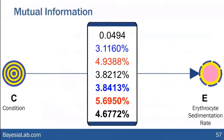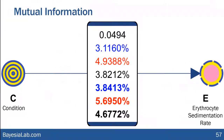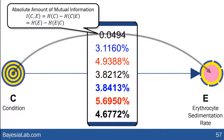On the left we have condition, on the right erythrocyte sedimentation rate. All these measures relate to mutual information. The top one is the base value we computed earlier. But that's not very informative by itself, because the possible range depends very much on how many states the nodes have.